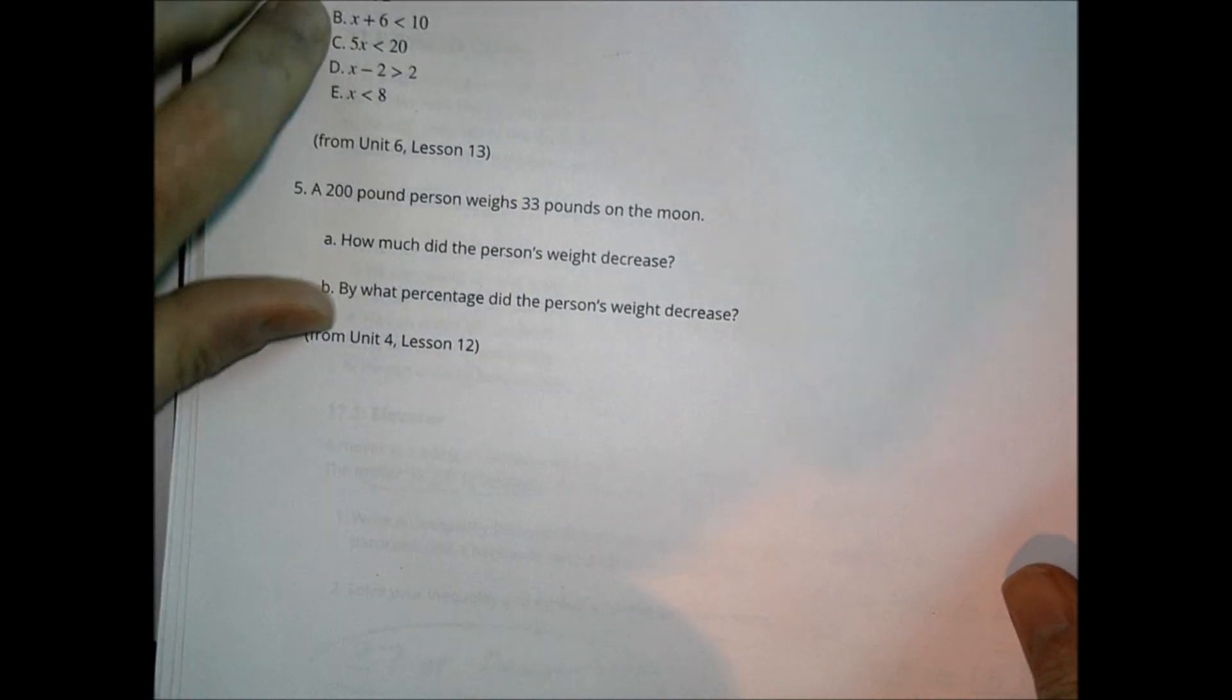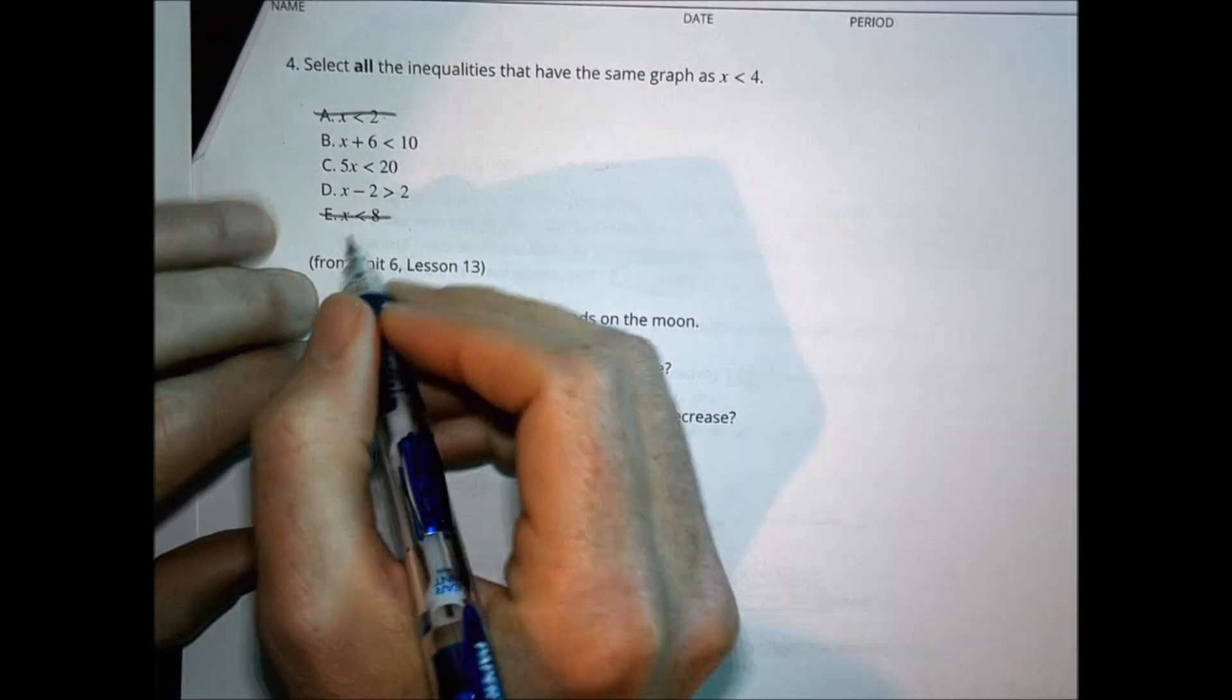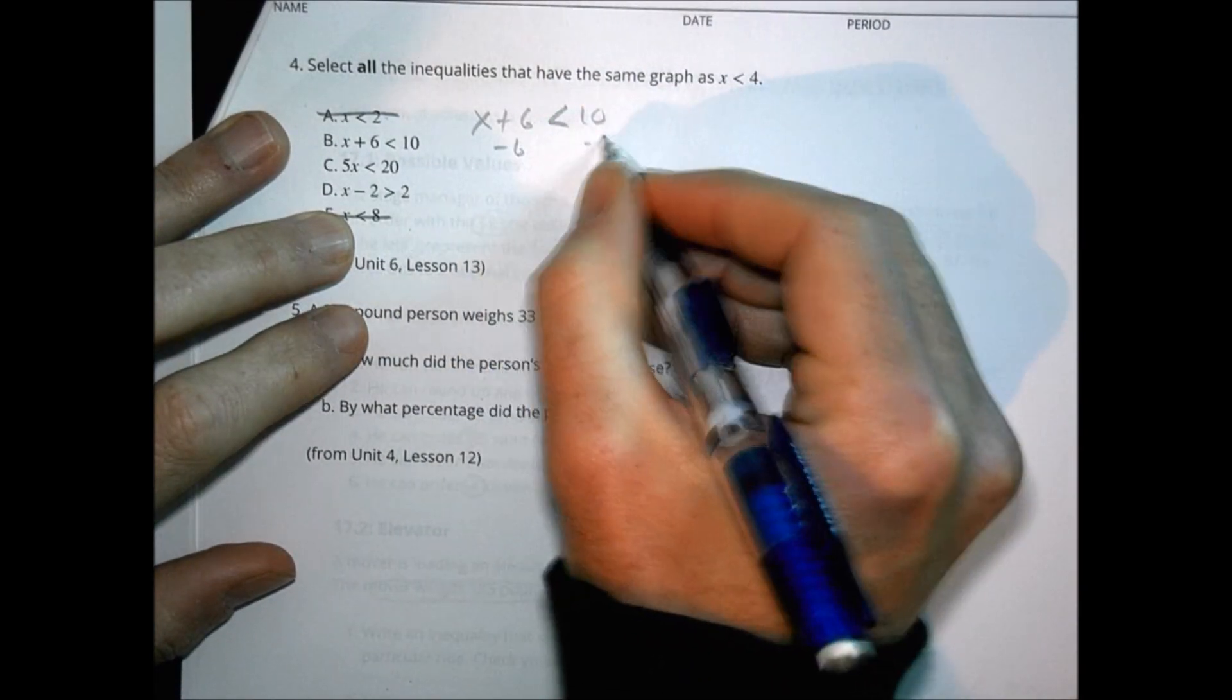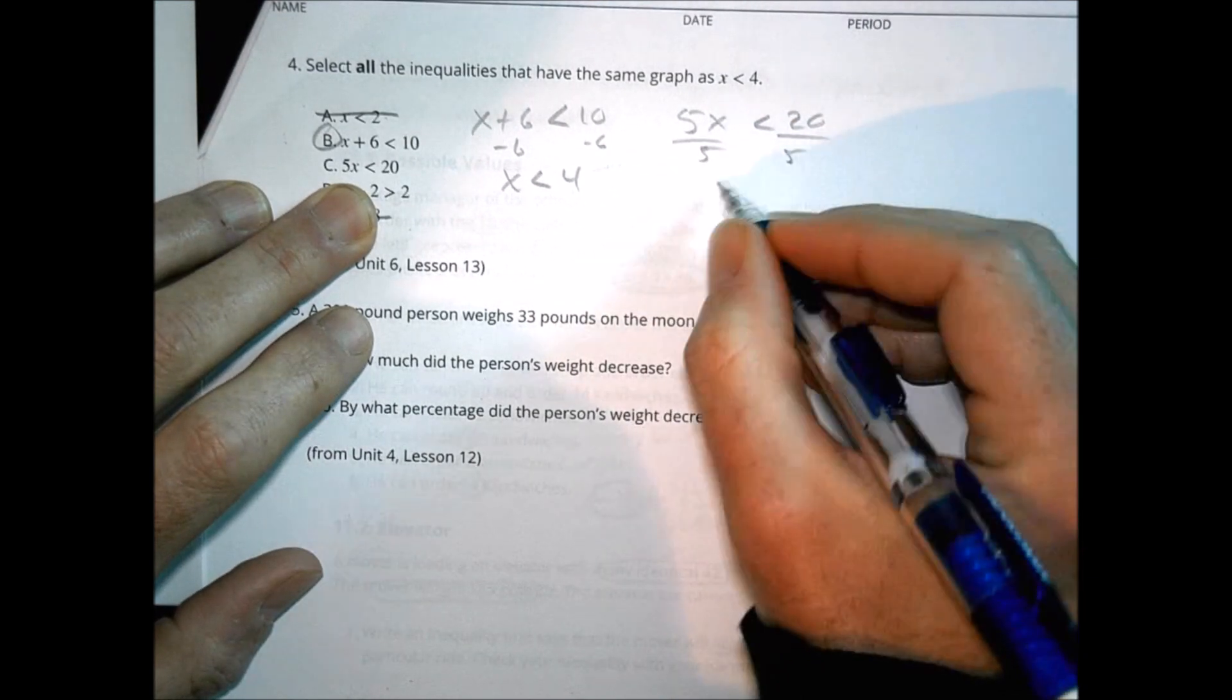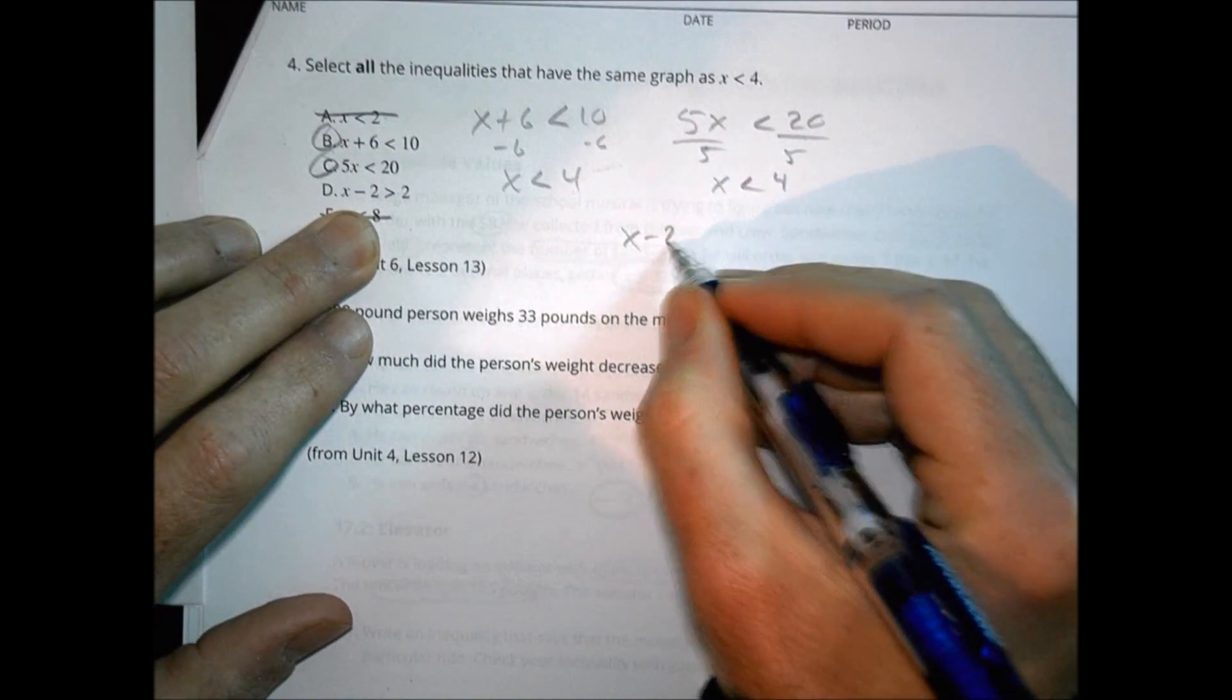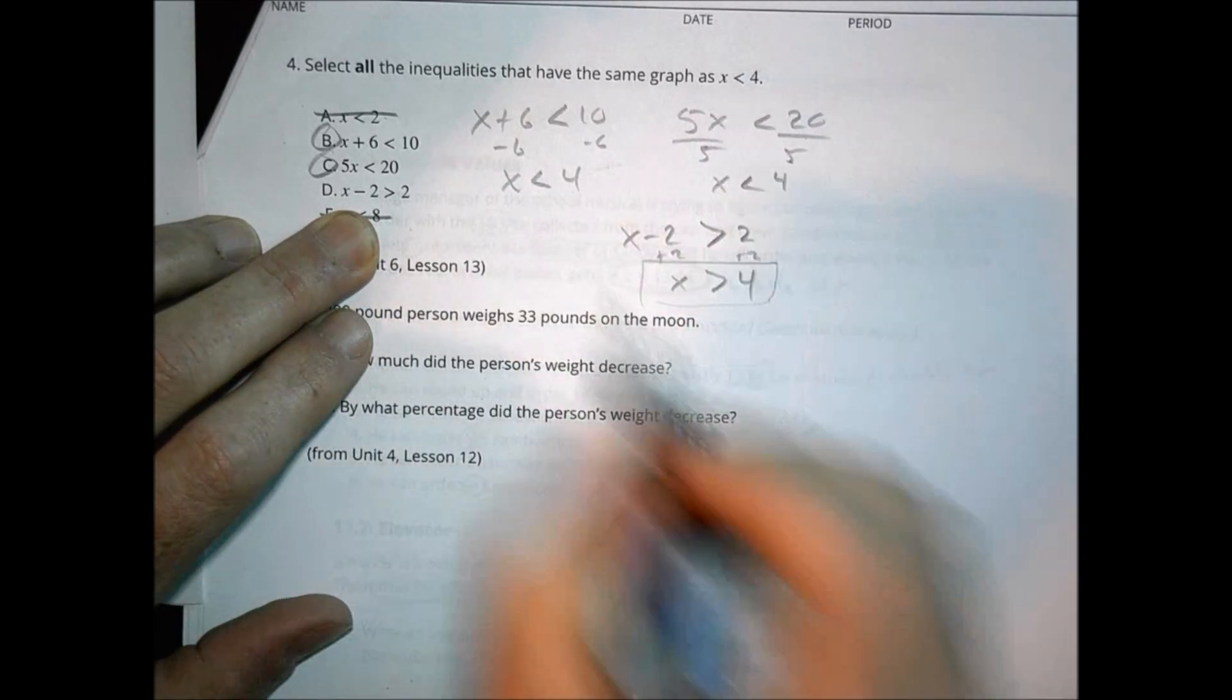Select all the inequalities that have the same graph as X is less than 4. X is less than 2, that's not going to work. X is less than 8, that's not going to work. Let's take a look at this one. X plus 6 less than 10. Subtract 6. X is now less than 4. That works. We have 5X less than 20. Divide both sides by 5. X is less than 4. That works. And here, X minus 2 is greater than 2. We add 2 to both sides. X is greater than 4. Be careful, that's going the wrong direction. We want it to be less than 4, so that won't work.